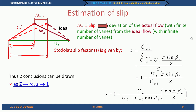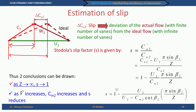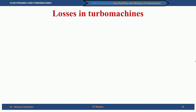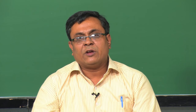Two conclusions can be drawn. First, as Z tends to infinity, the second term drops off and σ tends to 1, meaning C_U2' becomes C_U2 — with infinite blades there is no deviation. Second, if the volume flow rate increases, C_M2 increases and σ reduces. These are the two parameters determining how much slip occurs. We have now talked about the actual flows and the causes which make the flow deviate from vane congruent flow.